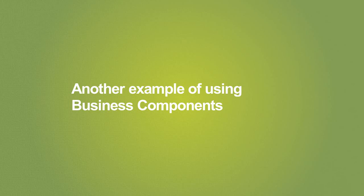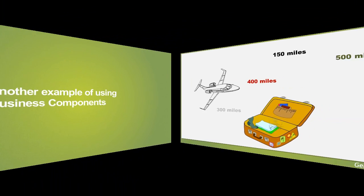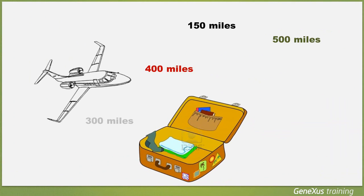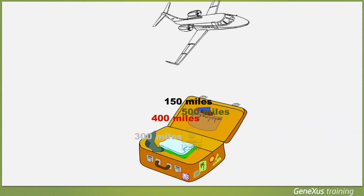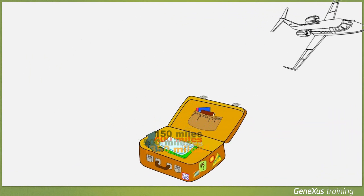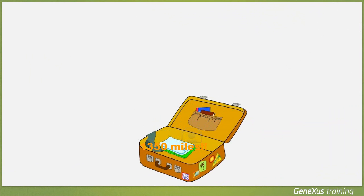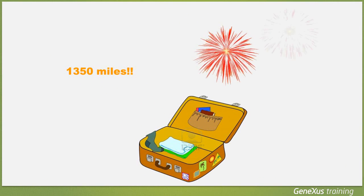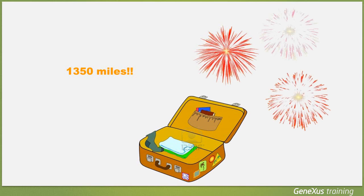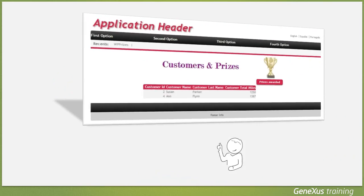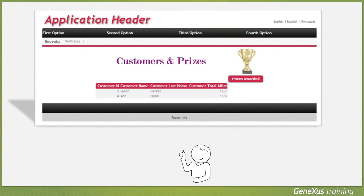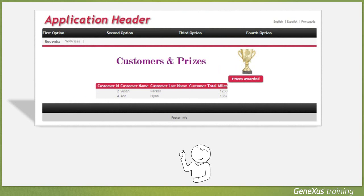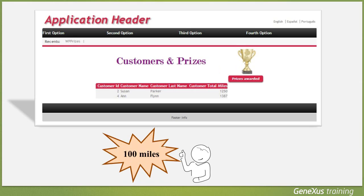Below we'll see a practical example of how to use business components. Let's start by laying out the following scenario. All of the travel agency's customers earn miles every time they make a trip. For promotional purposes, the agency decides to launch a customer reward program that gives a free dinner to customers who have earned more than a thousand miles and have not received this benefit before. A page needs to be created in order to give these rewards. We'll use drag and drop actions to drag the selected customers over an image at runtime. For these customers, the reward will be created automatically and 100 miles will also be credited to them.